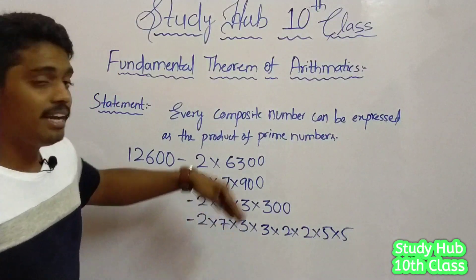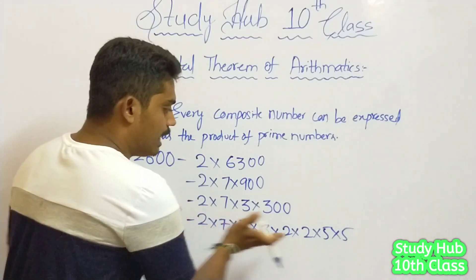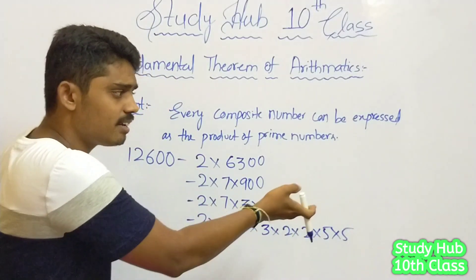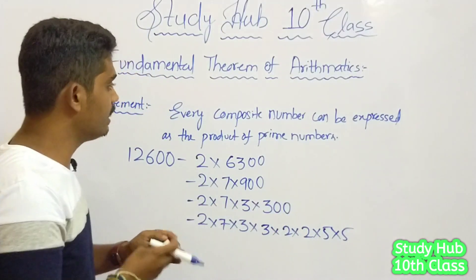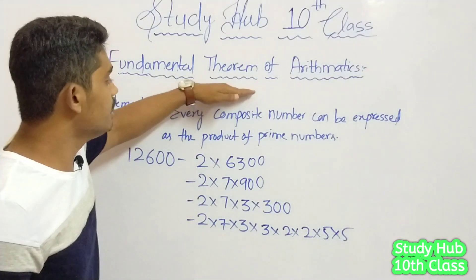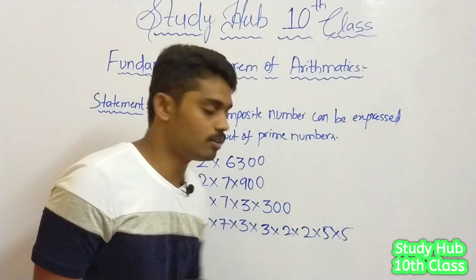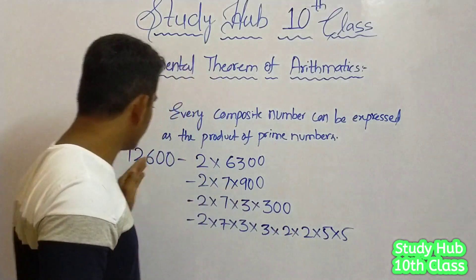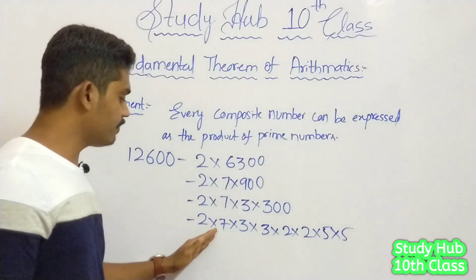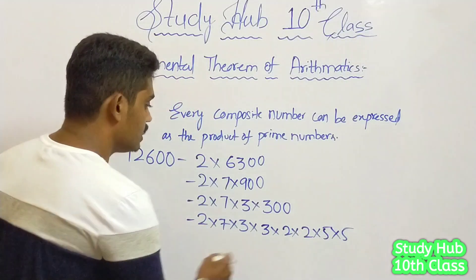So, as we have seen before with the 210 example, we are going to arrange them. The fundamental theorem of arithmetic says we need to arrange them in ascending order. All the prime factors — which we have reduced the composite numbers to — we are going to arrange them in ascending order, friends.